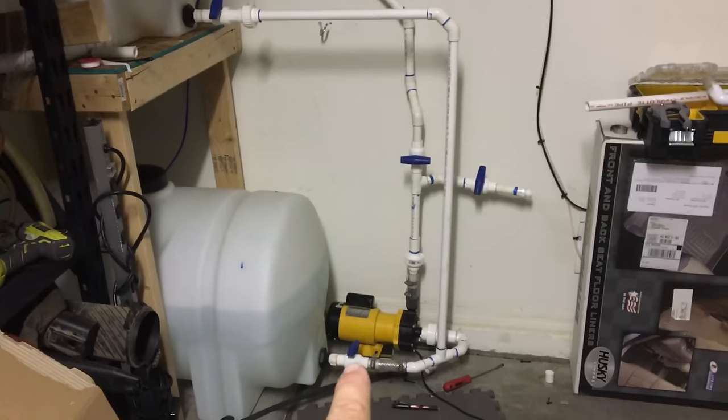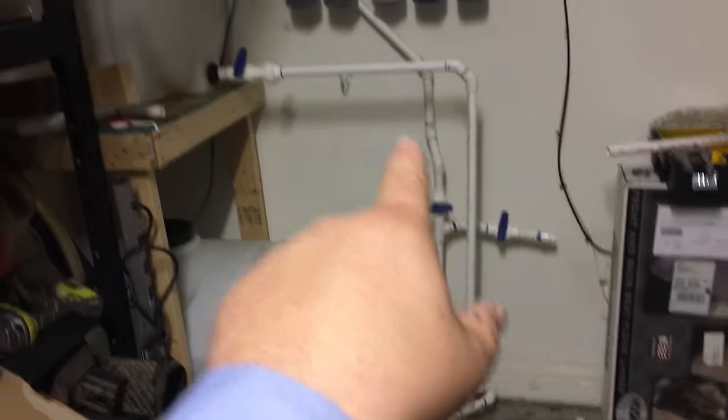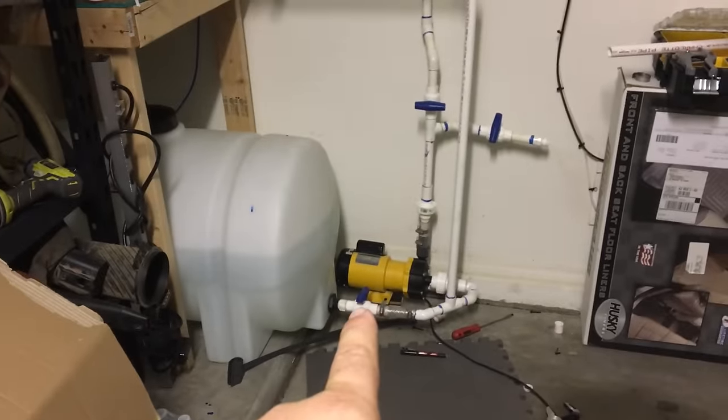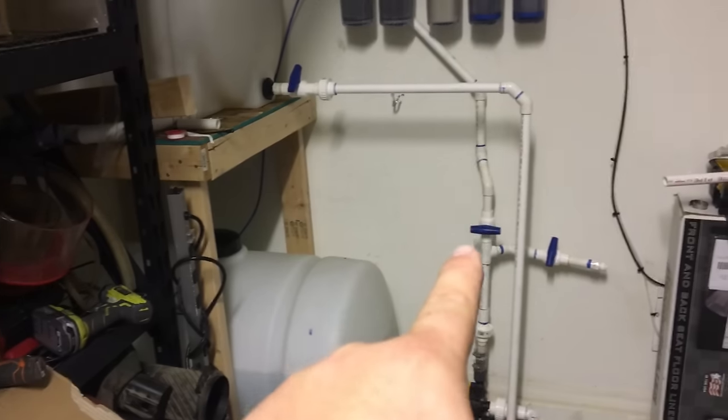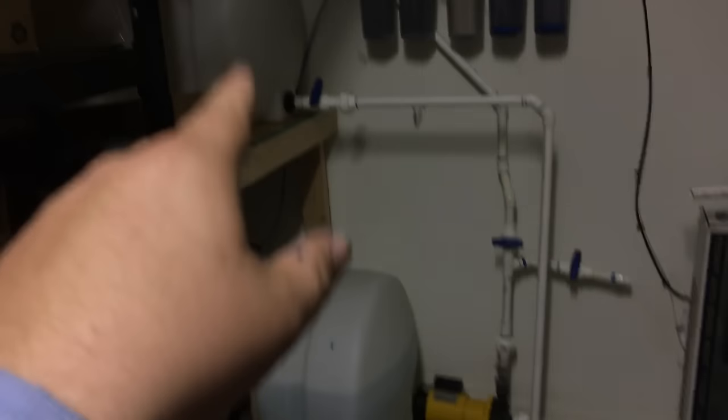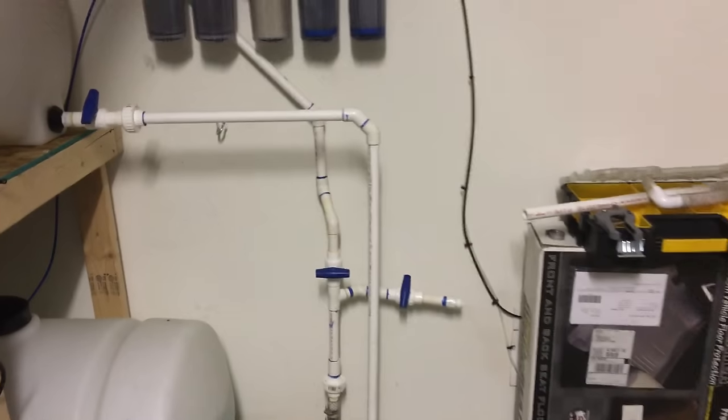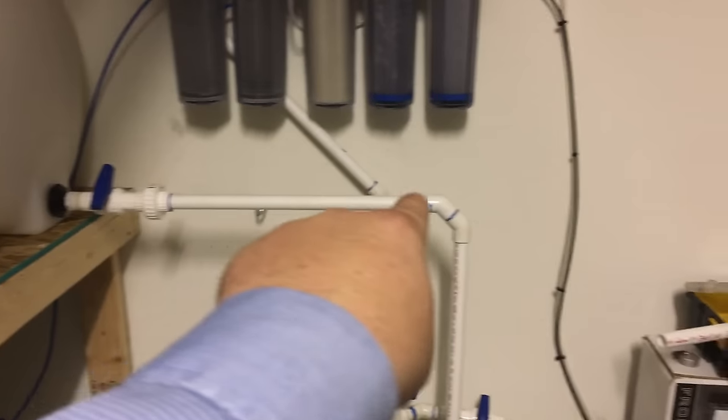If I need to fill this container up I'll close that valve, open that valve, open that one and then it'll fill this container up to where I need it. Then I'll close that valve, open that one, open that one and then that'll circulate the salt mixing tank.